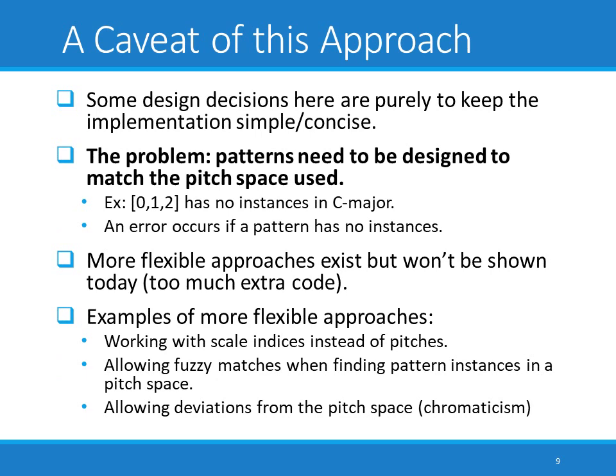There is one major caveat: it's possible to specify a pattern that has no valid instances for a particular pitch space. For example, the pattern 0, 1, 2 has no instances in C major because it has two chromatic half steps in a row, which does not occur in C major. We need to make sure patterns are designed to have at least some instances in the pitch space we're working with. More flexible approaches exist — such as working with scale indices instead of pitch numbers, allowing fuzzy matches, or permitting chromaticism — but they require extra code and complicate the algorithm.